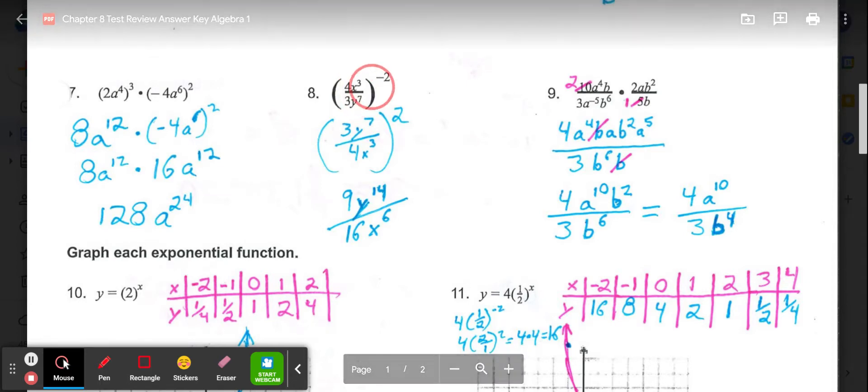In 8, the whole fraction is to the negative 2nd power. So what we can do is flip the fraction and then just get rid of that negative power. Instead of 4x to the 3rd on top, that would be on bottom, and 3y to the 7th would be on top, all to the 2nd power. Then when we take each part to the 2nd power, 3 squared is 9, y to the 7th squared is y to the 14th. Then on bottom, 4 squared is 16, x to the 3rd squared is x to the 6th.